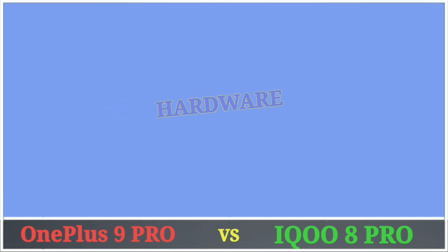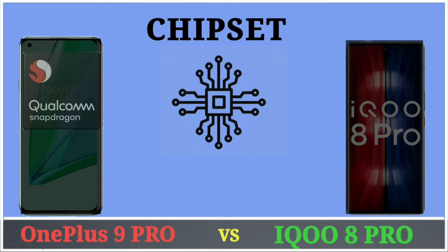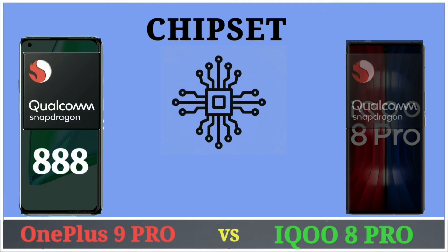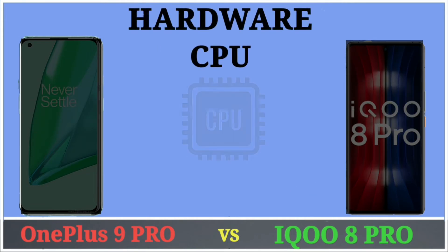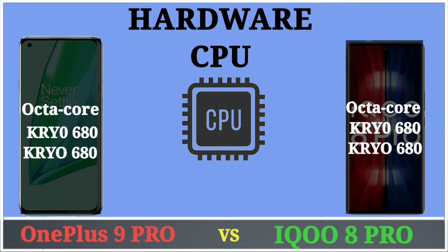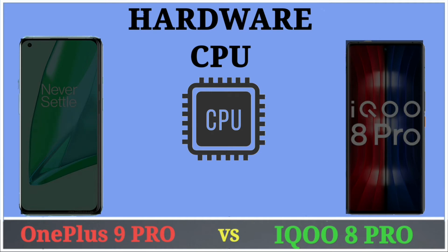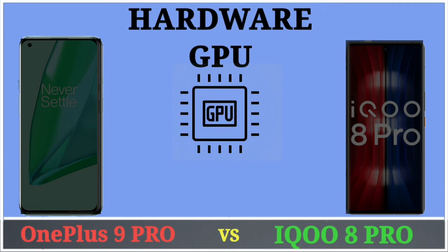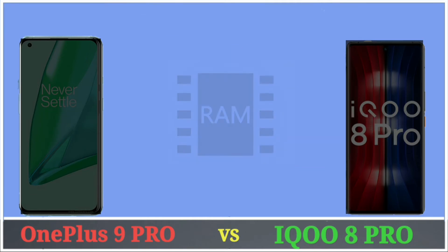For hardware, OnePlus 9 Pro has the Qualcomm Snapdragon 888 processor and iQOO 8 Pro has the Qualcomm Snapdragon 888 Plus processor. Both phones have an octa-core Kryo 680 CPU — the hardware CPU is the same. For the GPU, OnePlus 9 Pro has the Adreno 660 and iQOO 8 Pro also has the Adreno 660.